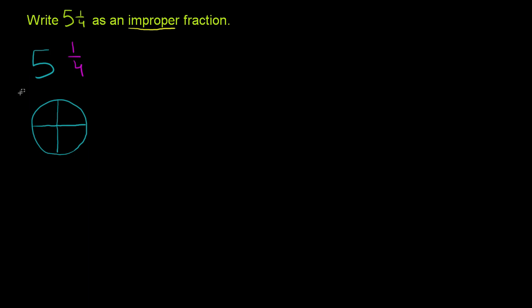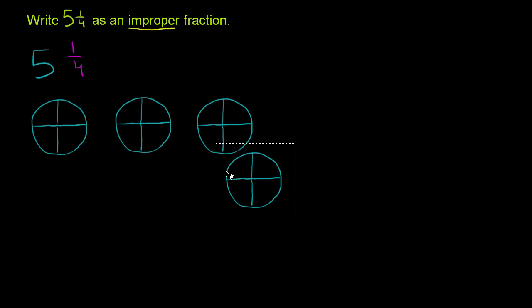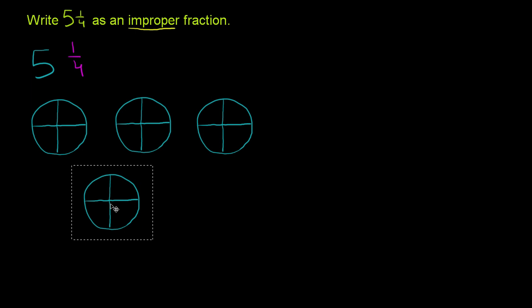So that's 1 pie right over there. Let me copy and paste this. So I have 2 pies, and then I have 3 pies, and then I have 4 pies, and then I have 5 pies.